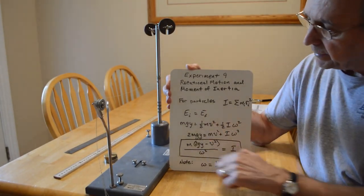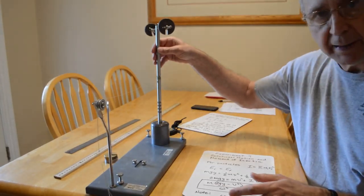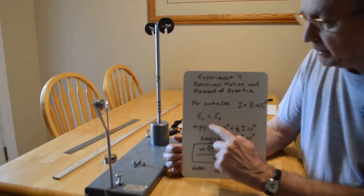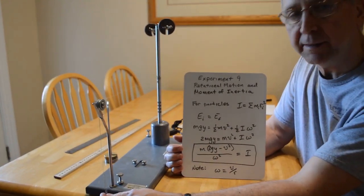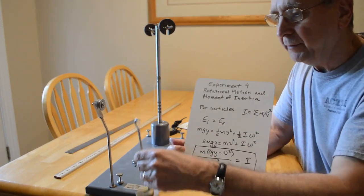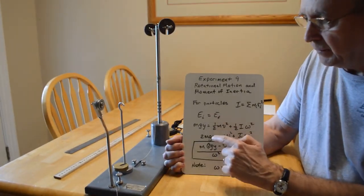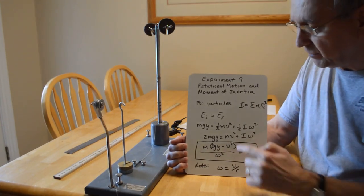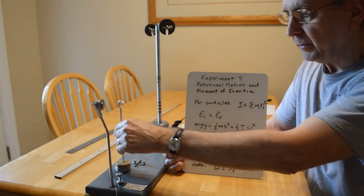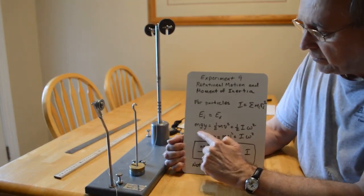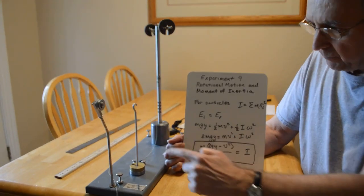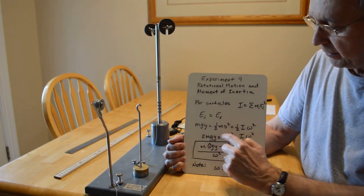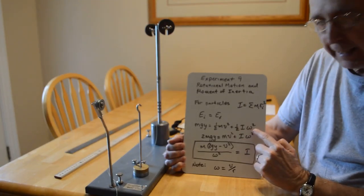To find this with the apparatus, the falling weight is going to make this spin, so we'll apply conservation of energy. The initial energy equals the final energy. Initially everything is at rest and this weight is hanging above the ground, so we have gravitational potential energy. When it reaches the floor, the weight is moving and the apparatus is spinning. So our initial energy is just the gravitational potential energy mgy, where y is the distance it falls. At the bottom we have kinetic energy — one half little m v squared — plus one half I omega squared.